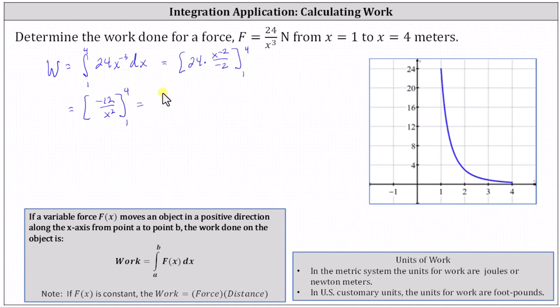When x is four, we have negative 12 divided by four squared. And when x equals one, we have negative 12 divided by the square of one.